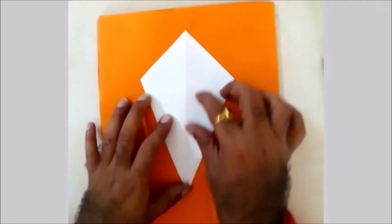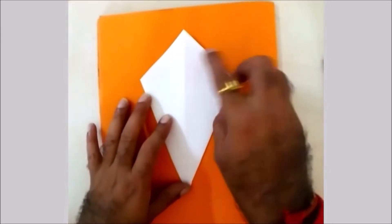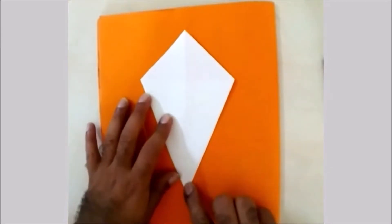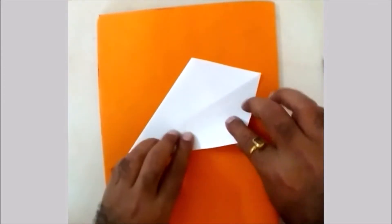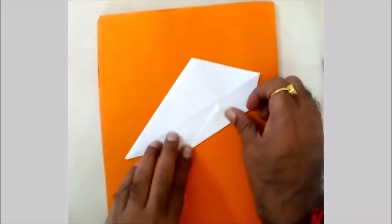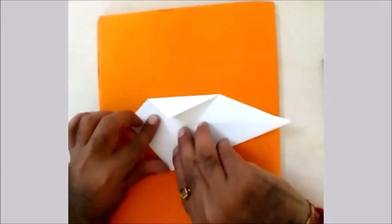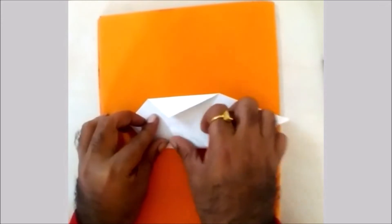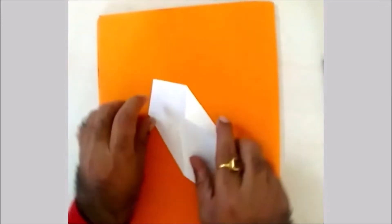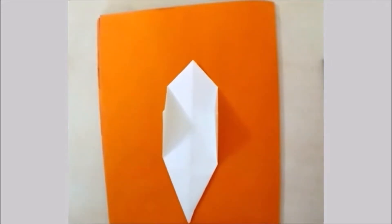Now here you can see one straight center line. Up to that point you have to fold it, a back fold. Again same here, a back fold both ways in a straight manner. Now take your glue gun.